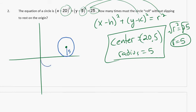And we want to know how many times it has to roll without slipping to rest on the origin. So it's going to be rolling this way until it rests exactly on the origin. Right now, the point of tangency is 20 away from the origin, so we need to know how many times the circle has to roll to travel 20 units.